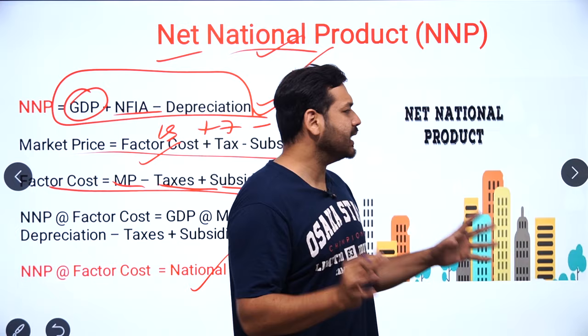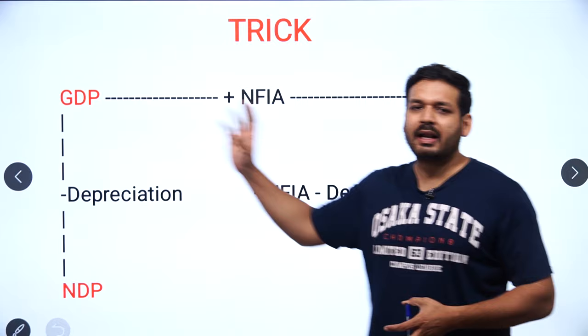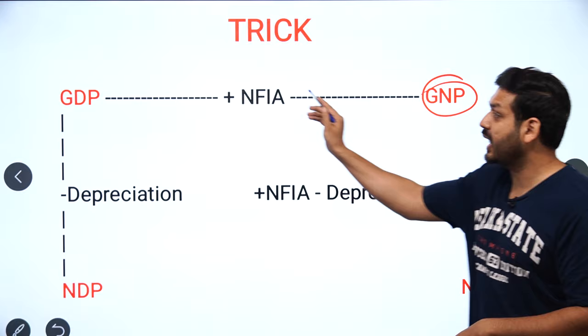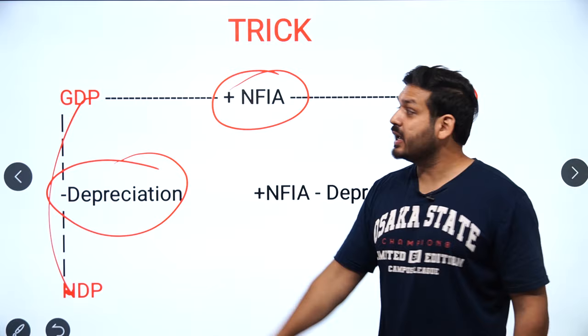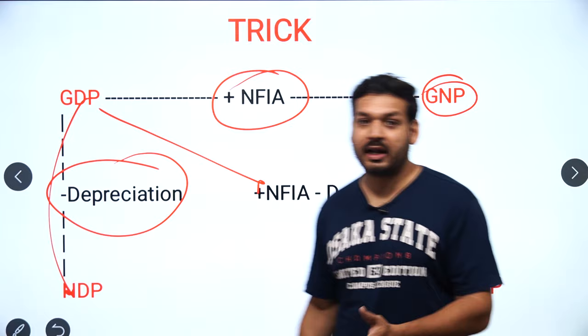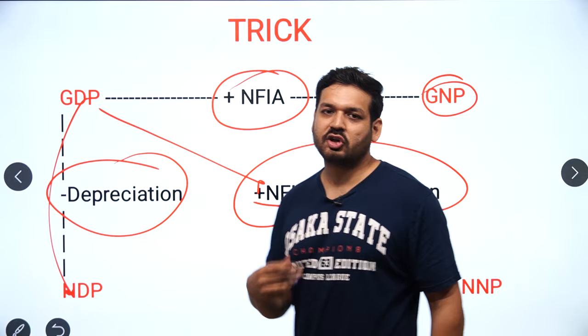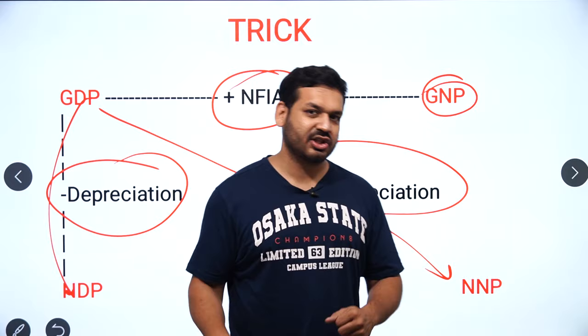Let me conclude with a revision. To go from domestic to national, add Net Factor Income from Abroad. To go from GDP to NDP, subtract Depreciation. To go from GDP to NNP, add Net Factor Income from Abroad and subtract Depreciation. Remember: NDP at Factor Cost is known as National Income.